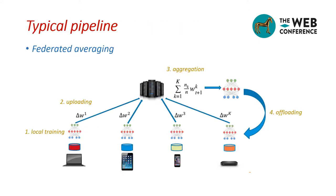A typical method to implement federated learning is federated averaging, which generates a global model by averaging the local parameters uploaded from each client. During the process, we do not exchange the sensitive raw data in each client, and thus protect user privacy.